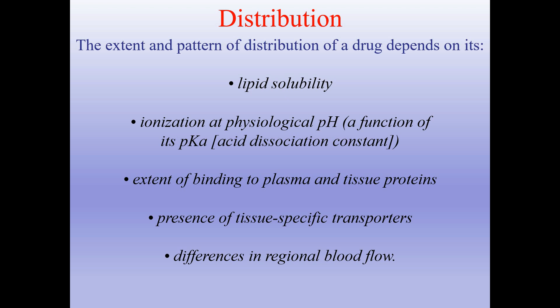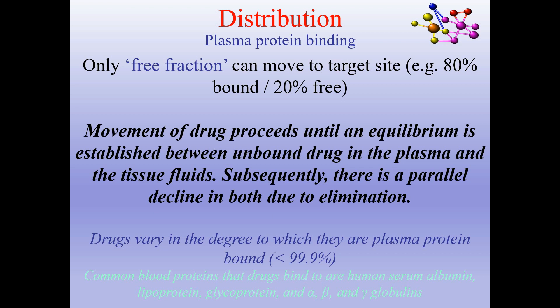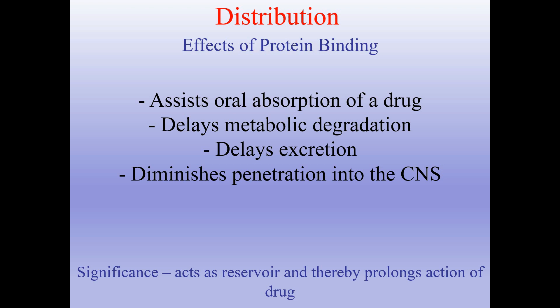Regarding plasma protein binding, only the free fraction can move to the target site — for example, 80% bound and 20% free. Movement of drug proceeds until an equilibrium is established between unbound drug in the plasma and the tissue fluids, followed by a parallel decline due to elimination. Common blood proteins drugs bind to are human serum albumin, lipoprotein, glycoprotein, and alpha, beta, and gamma globulins. Effects of protein binding: it assists oral absorption, delays metabolic degradation, delays excretion, and diminishes penetration into the CNS. It acts as a reservoir, thereby prolonging the action of the drug.